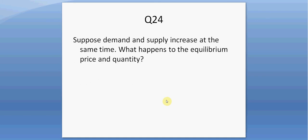Question twenty-four. Suppose demand and supply increase at the same time. What happens to the equilibrium price and quantity? When demand rises, price goes up; when supply rises, price falls. We don't know what's going to happen to price — it could go up, down, or stay the same, depending on the magnitude of the shifts. However, the equilibrium quantity will definitely rise, since both a rightward demand shift and a rightward supply shift increase equilibrium quantity.